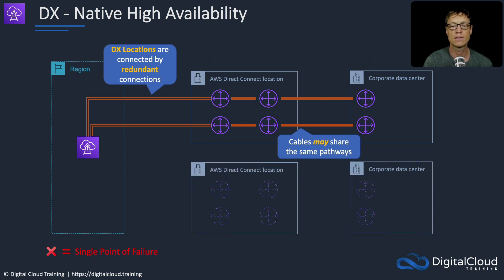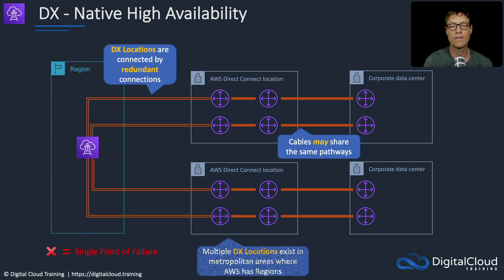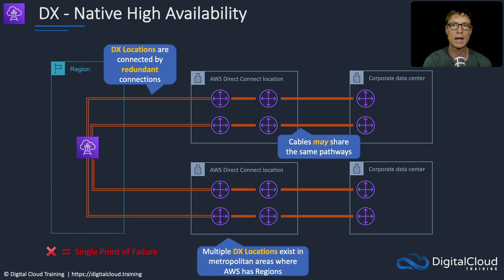To take it to the next level, we can use two Direct Connect locations with two corporate data centers and redundancy built into each one - this is the truly highly available architecture. Multiple DX locations exist in metropolitan areas where AWS has a region, so you should have multiple options. This is considerably more expensive than a lower level of redundancy. As you add redundancy you always add cost, but you have to consider your business, the impact of an outage, and the likelihood of an outage to determine if that cost is acceptable.